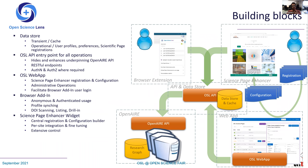A quick glimpse behind the scenes: the top two building blocks are the browser extension and the Science Page Enhancer — our user-facing components. Underneath we have the Open Science Lens API, which is the gateway into all the functionality that aggregates, transforms, and expands on the information available from the OpenAIRE API and Research Graph. There's also a web application primarily for administrative purposes and to assist in the registration process of content providers, where they can get access to the Science Page Enhancer and a configuration builder.